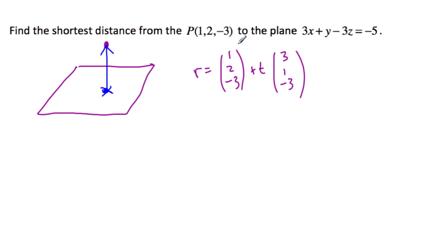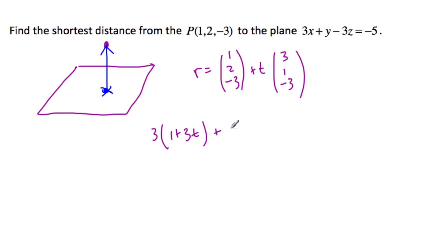So then what we want to do is find the time t — how long do I have to travel going this direction to hit the plane. So we're going to substitute in all these x's, y's, and z's right into the plane. So we have 3 times (1 + 3t), plus (2 + t), minus 3, minus 3, minus 3t, is equal to minus 5.